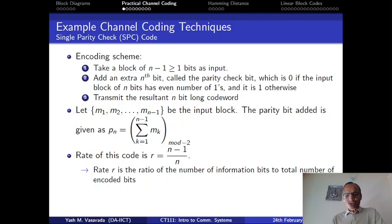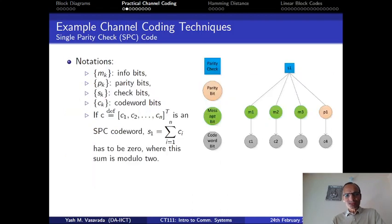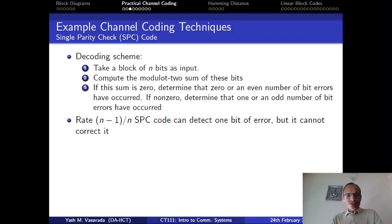We have talked about this single parity check code which is formulated like this. And this is the block diagram or the graphical representation of the SPC code. The rate of this code is n minus 1 over n. This is the decoding scheme for the SPC codes. So this all you should be familiar with.